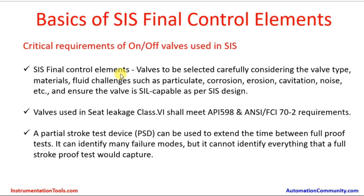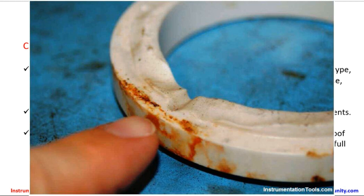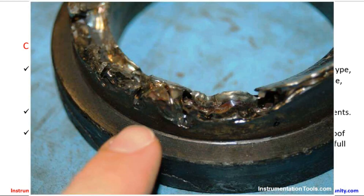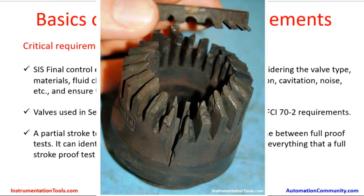Critical requirements for on-off valves used in the safety instrumented system: valves must be selected carefully, considering valve type, materials, and fluid challenges such as particulate, corrosion, erosion, cavitation, and noise. Ensure the valve is SIS-capable as per the SIS design. The chemical process characteristics — such as erosion — can impinge on the valve body, and there is a possibility of erosion or cavitation impacting the performance of the SIS valves.